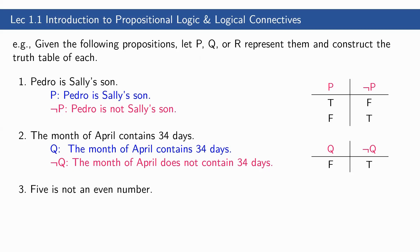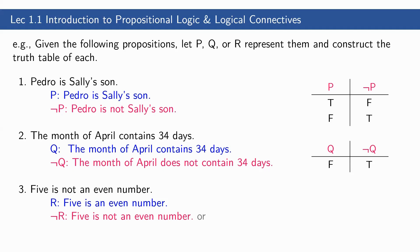Third, the original statement is 'Five is not an even number.' When using propositional variables, we do not include the 'not' when representing the proposition. So R: 'Five is an even number.' And not R is the original statement: 'Five is not an even number,' or we can also say 'Five is an odd number.' Since this is specific, the truth table has one row: R is false, not R is true.